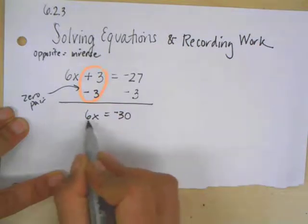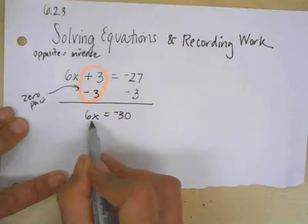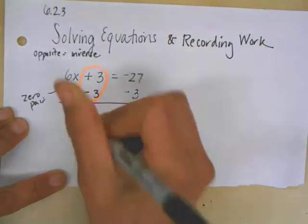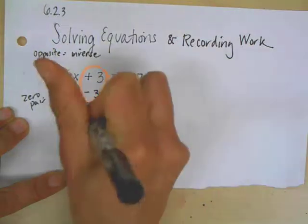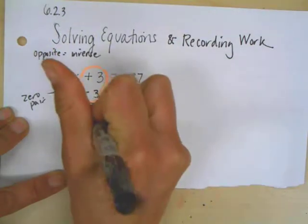Once again, my end goal is to get x equal to something. So right now I've got the 6 in front of it. That's a problem. So I want to ask myself, what operation is happening there? This is 6 times. You don't see it, but there's an invisible multiplication sign.